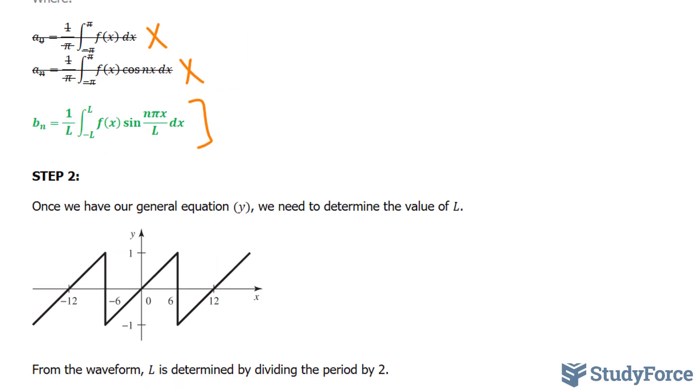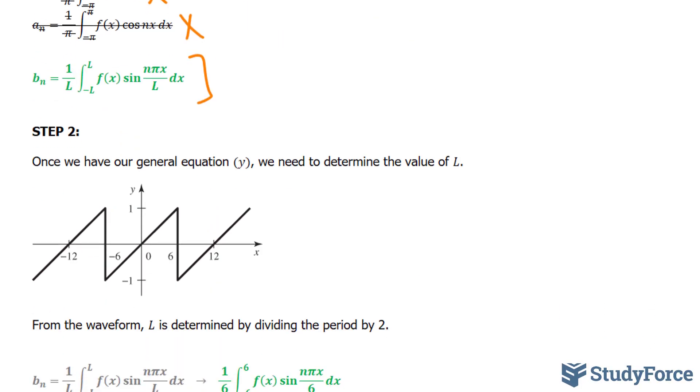In step number 2, once we have our general equation for y or f of x, we need to determine the value of L. And here's how to do that. Remember, the period is represented as 2L. And here's our waveform. It starts here and ends here, for example. That's a span of 12 units.